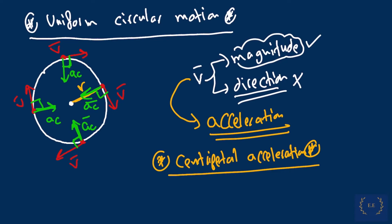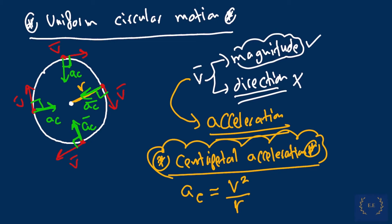The main reason we have this acceleration is because the velocity vector is changing direction, even though the magnitude is the same. If we want to calculate the centripetal acceleration, we use the formula: acceleration with subscript c equals the velocity squared over the radius r. Velocity is measured in meters per second, radius is in meters, and the acceleration is in meters per second squared. Once you have the velocity and the distance from the rotation, you can calculate the centripetal acceleration.